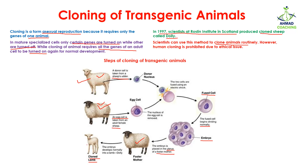The sheep will then give birth to a cloned lamb, which will have the characteristics of the donor sheep because we used the nucleus of that sheep. These are the simple steps used for the cloning of transgenic animals. If you have any questions related to this topic, you can ask me in the comment section. I will see you in the next video.